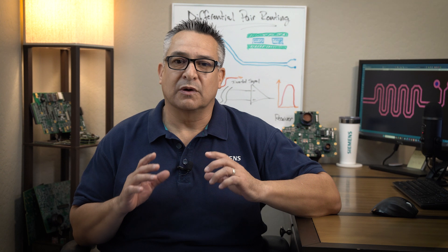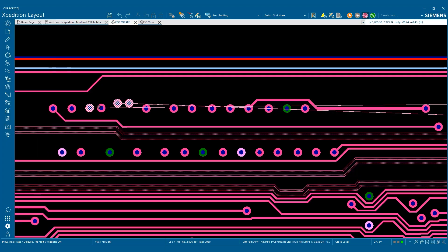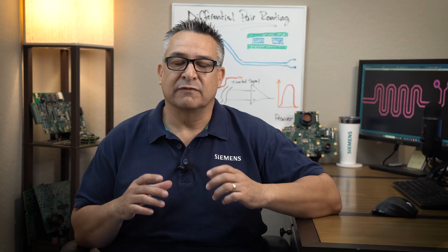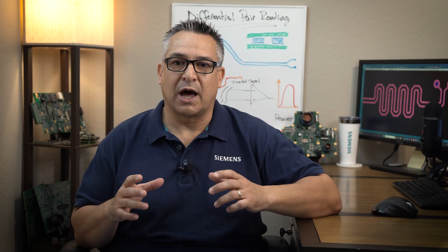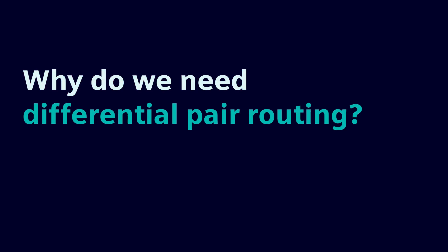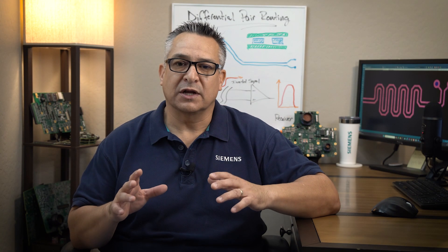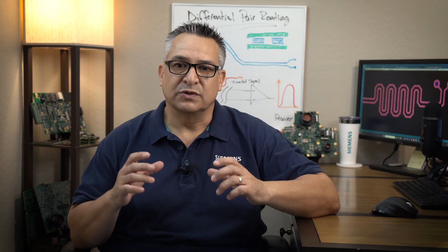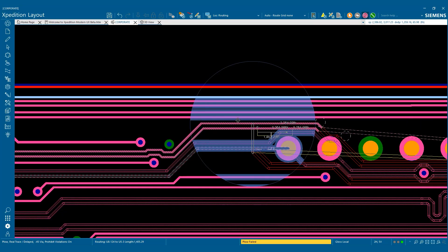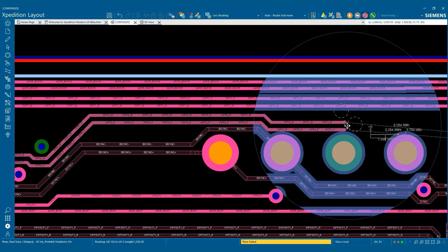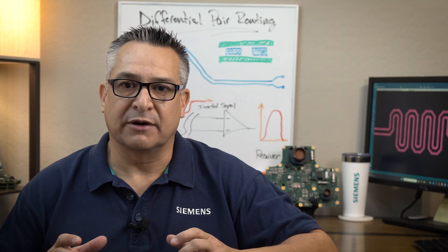Differential pair routing is when you're routing a signal from the transmitter to the receiver using two different signal traces that have the same amplitude but opposite in polarity. We use differential pair routing when we want to transmit high-speed signals to ensure the quality of the signal by utilizing two signals that transmit the same amplitude but opposite in polarity.